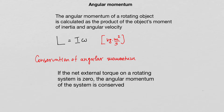A common example is a figure skater who is spinning in place. When the figure skater has her arms stretched out, she is rotating with a slower angular velocity. But when she brings her arms in closer to her body, she will spin with faster angular velocity. The reason for that change is that her moment of inertia changes based on how her mass is distributed with respect to the axis of rotation of her body.